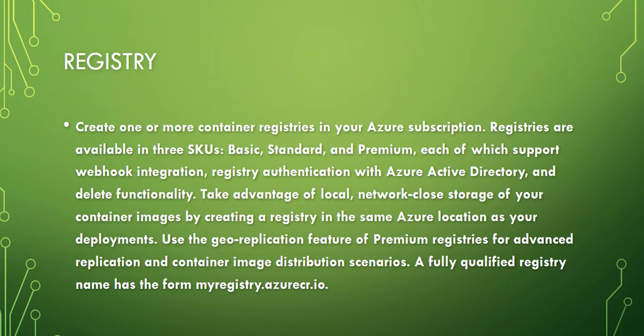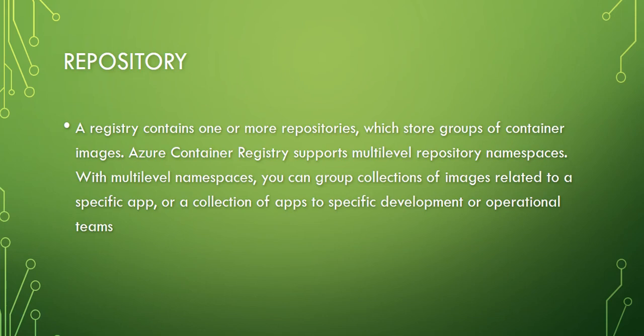The geo-replication feature of the Premium registry is for advanced application and container distribution scenarios — for example, if you want to enable replication of your container image from one geographical region to another. A fully qualified registry name has the form: myregistry.azurecr.io — where 'myregistry' can be any name you choose, and the postfix is .azurecr.io.